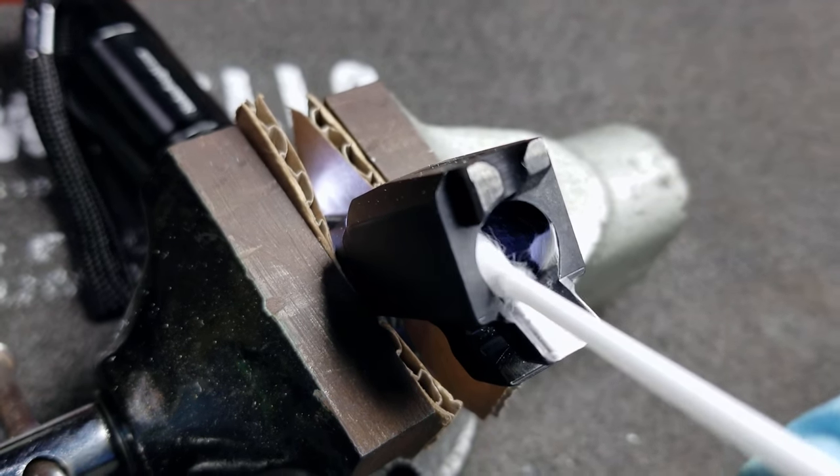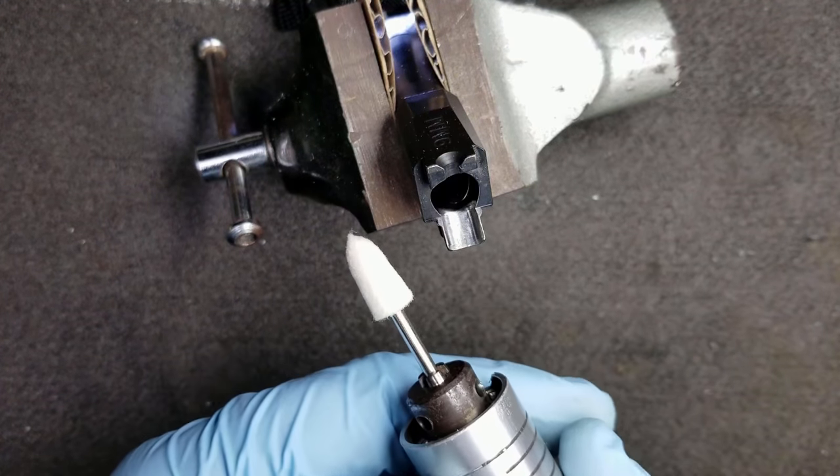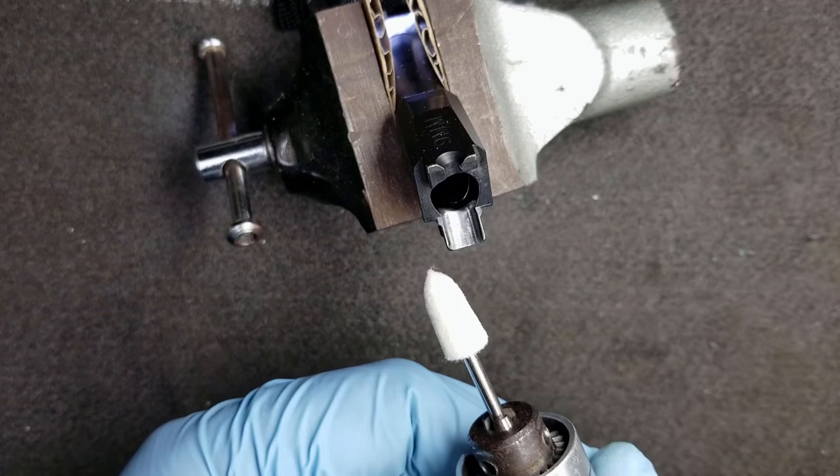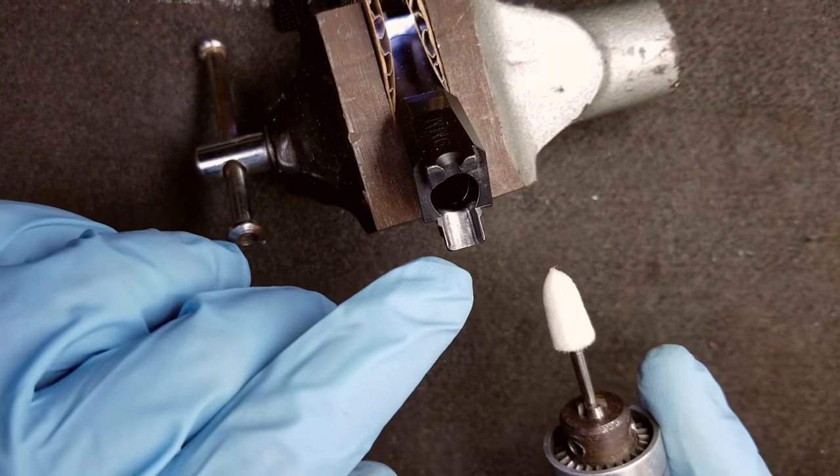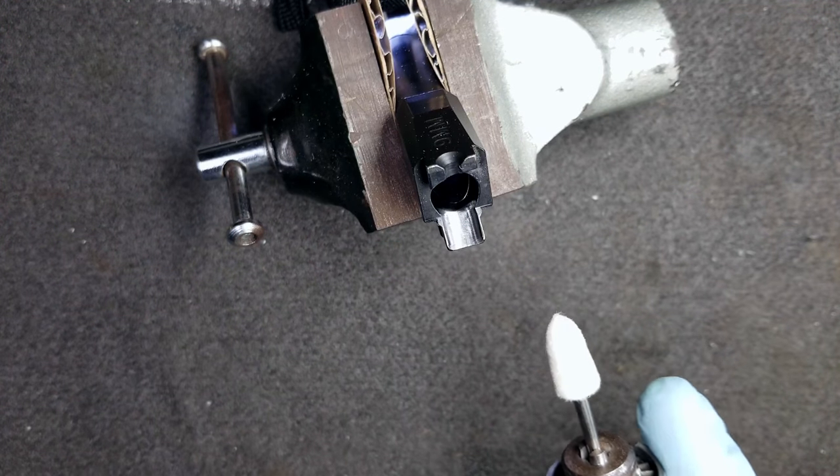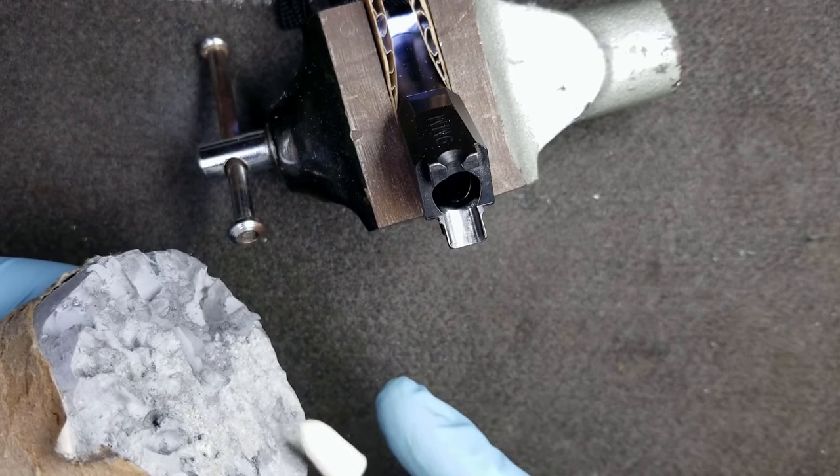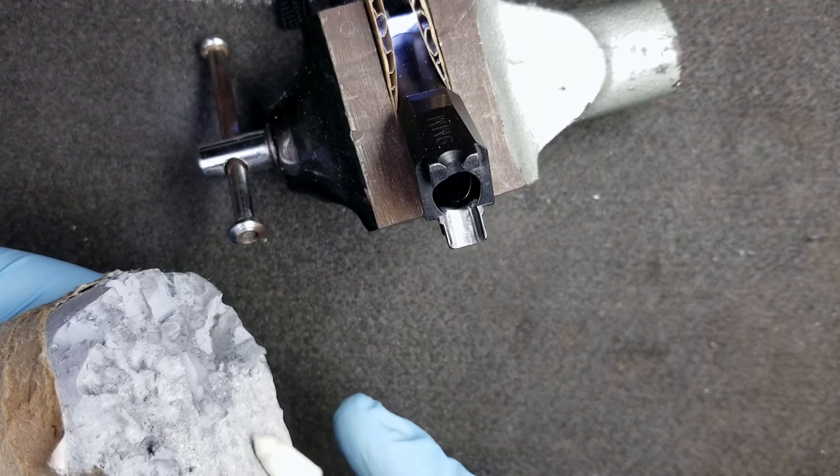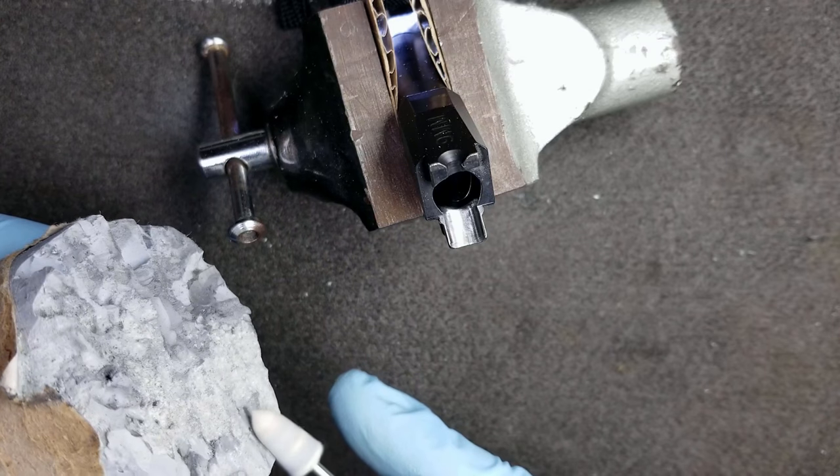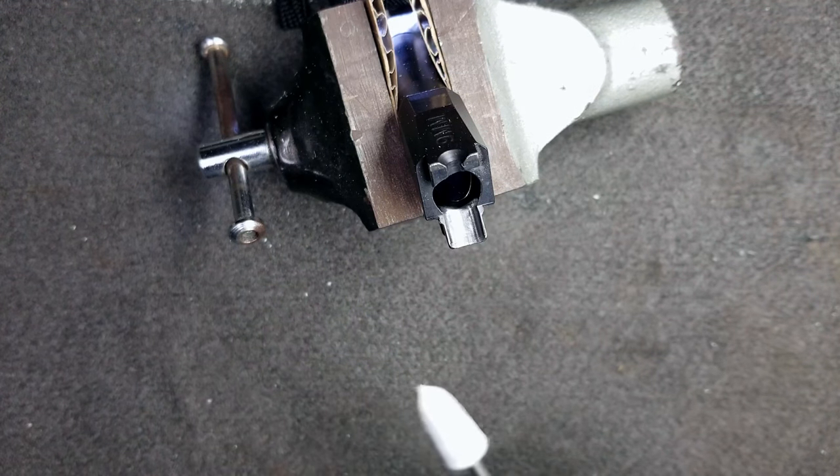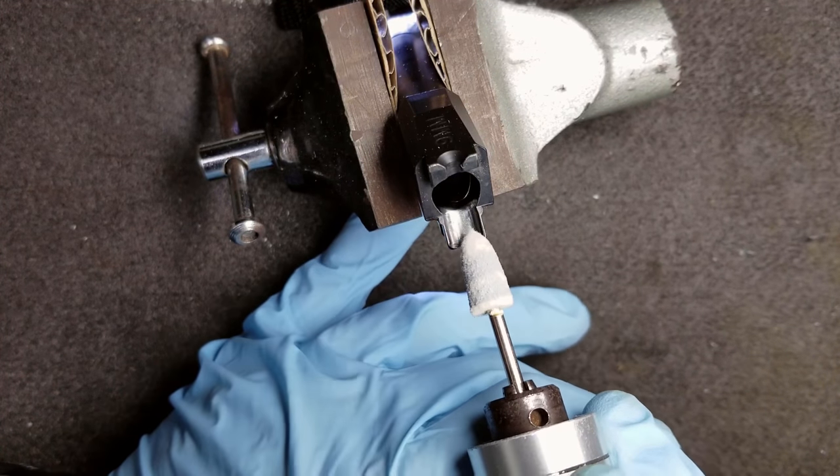Next we changed the head of our felt bob. We got a new bit with a different shape and now we're gonna polish our feed ramp. Same process as before, we're going to get our felt bob, get a little bit of our polishing compound and impregnate our felt bob, get some material on there, and then we are going to start polishing our feed ramp.